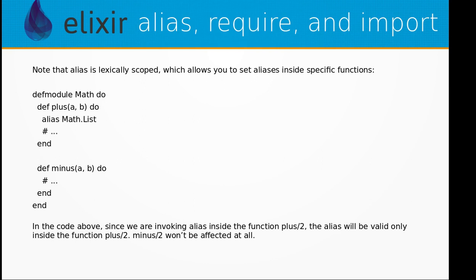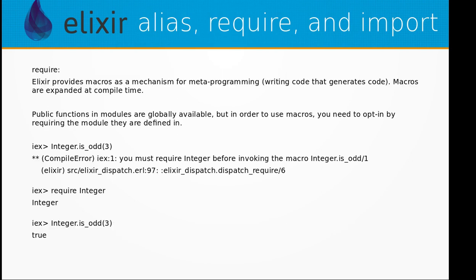Now let's look at the require keyword. Elixir provides macros as a mechanism for meta-programming — that is, writing code that generates code. Macros are expanded at compile time. Public functions in modules are globally available, but in order to use macros you need to opt in by requiring the module they are defined in.